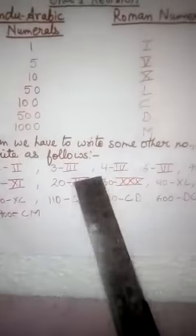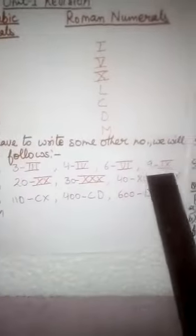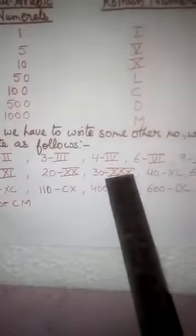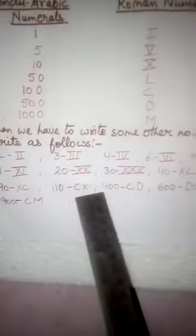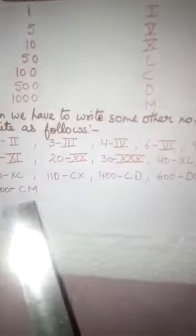2, 3, 4, 6, 9, 11, 20, 30, 40, 60, 90, 110, 400, 600 and 900.